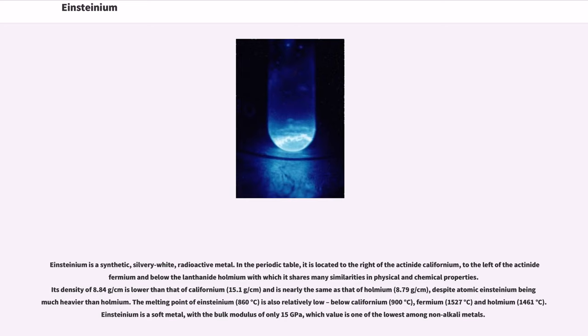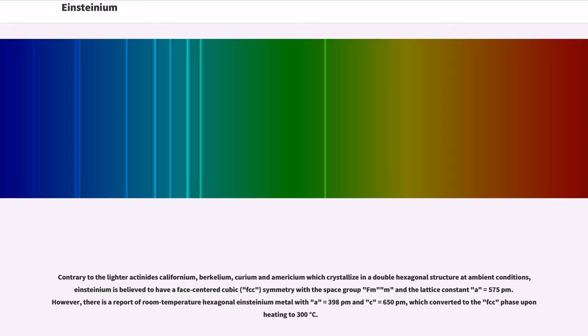The melting point of Einsteinium, 860 degrees Celsius, is also relatively low, below californium, 900 degrees Celsius, fermium, 1527 degrees Celsius, and holmium, 1461 degrees Celsius. Einsteinium is a soft metal, with a bulk modulus of only 15 gigapascals, which value is one of the lowest among non-alkali metals. Contrary to the lighter actinides californium, berkelium, curium and americium which crystallize in a double hexagonal structure at ambient conditions, Einsteinium is believed to have a face-centered cubic (FCC) symmetry with the space group Fm3m and the lattice constant a equals 575 pm. However, there is a report of room temperature hexagonal Einsteinium metal with a equals 398 pm and c equals 650 pm, which converted to the FCC phase upon heating to 300 degrees Celsius.